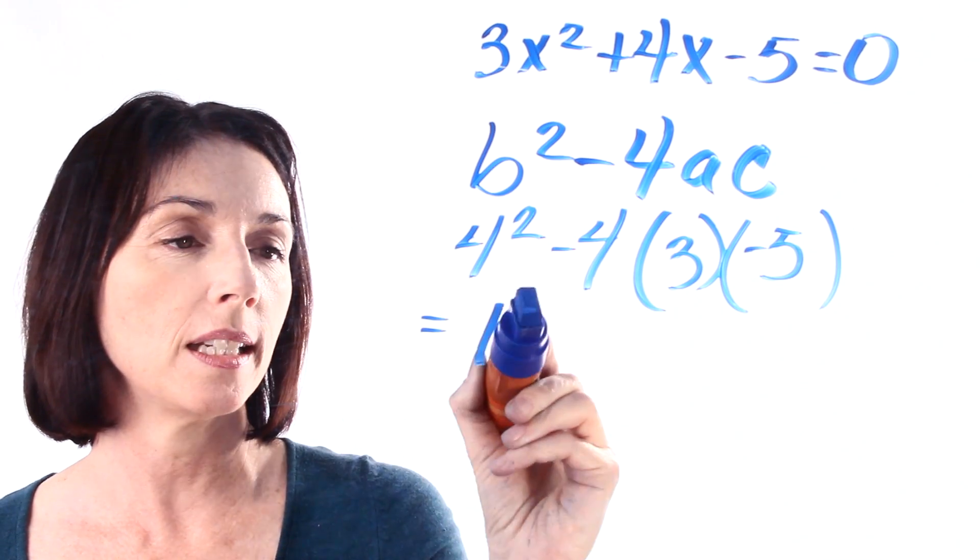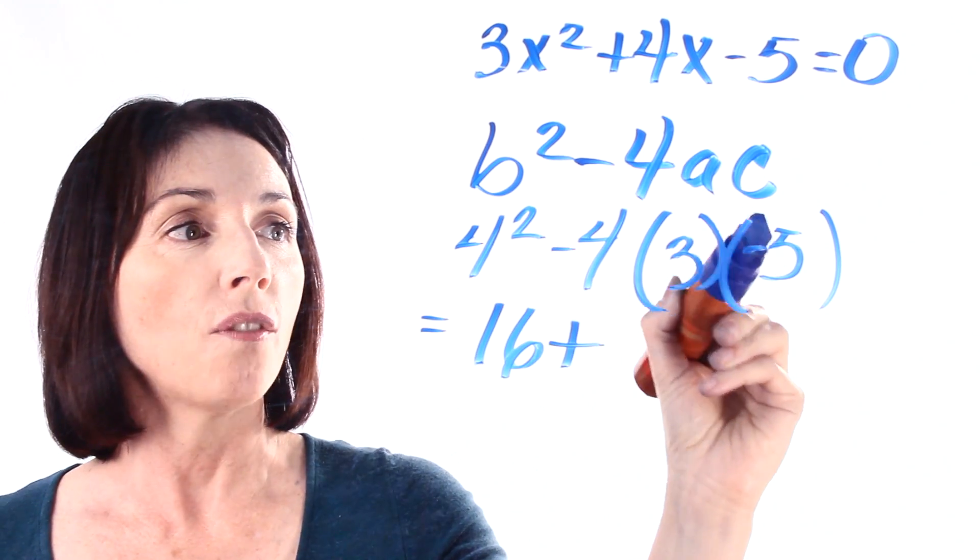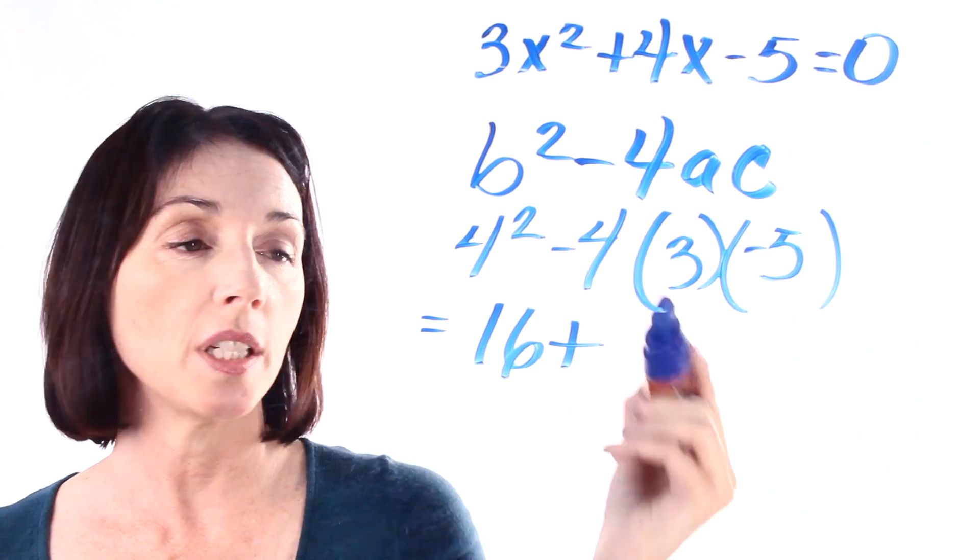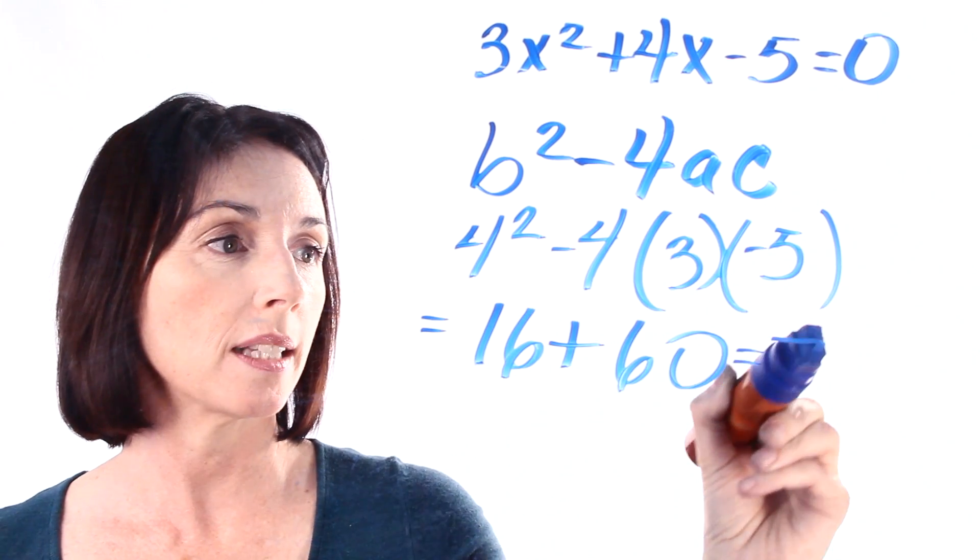4 squared is 16. Now we have a minus times a minus here, so that'll give us a plus. 5 times 3 is 15 and 15 times 4 is 60. So 16 plus 60 is equal to 76.